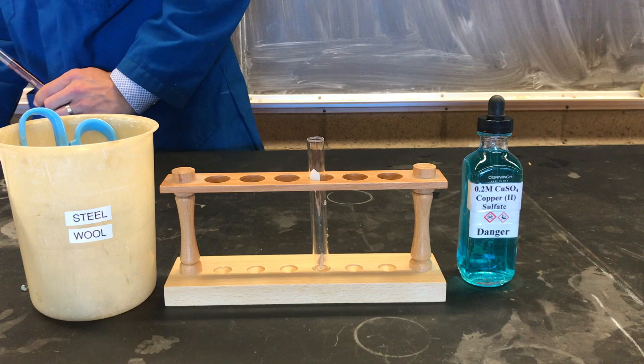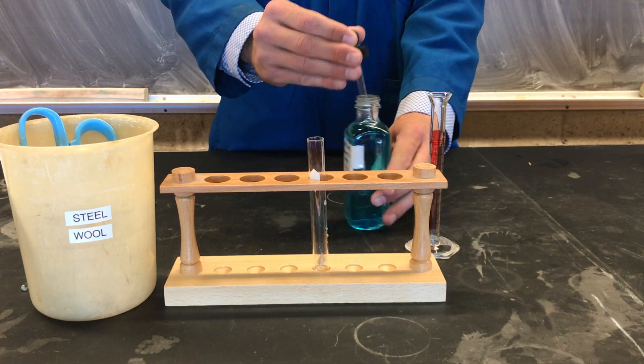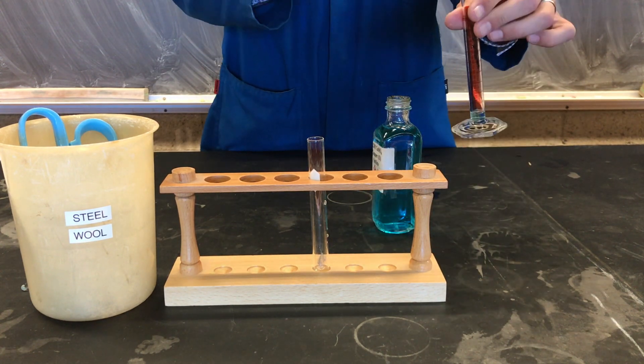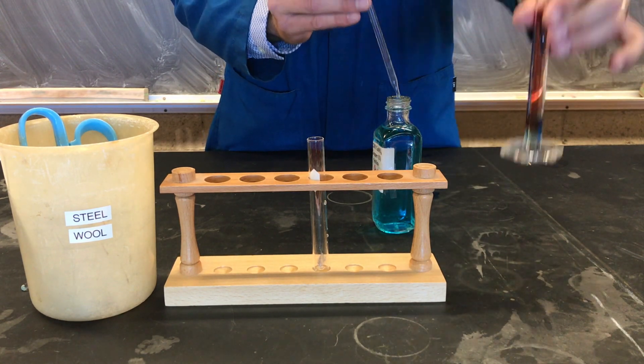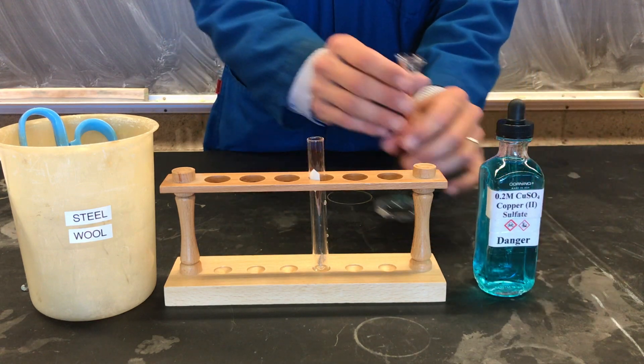We'll then add about 2 ml of our copper sulfate solution to a 10 ml graduated cylinder and add it to our test tube.